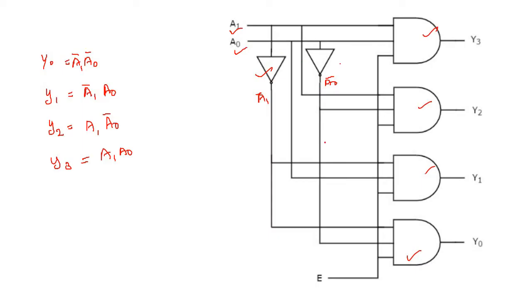A0 bar and A1 bar are the complemented inputs fed into AND gates. Y1 is A1 bar AND A0; Y2 is A1 AND A0 bar; Y3 is A1 AND A0. We continue entering inputs to implement Y2 and Y3 using the complemented and non-complemented versions of A0 and A1.